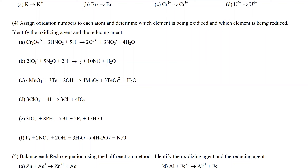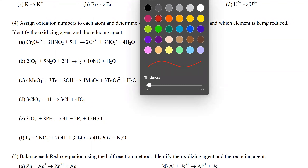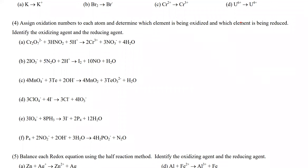So, what we had started doing was figuring out who was getting reduced and who was getting oxidized in a particular reaction. So, there's a reaction happening and you have to figure out the oxidation state. If the oxidation state decreases, that means a reduction is happening. If it increases, that means oxidation is taking place.